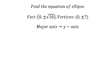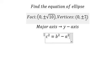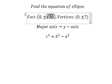In this situation, we use the formula c² = b² - a², not a² - b² anymore. So c is √10 and b is 7.